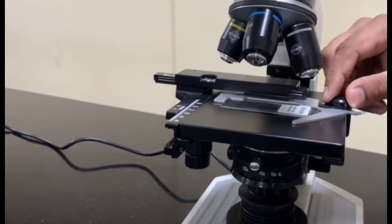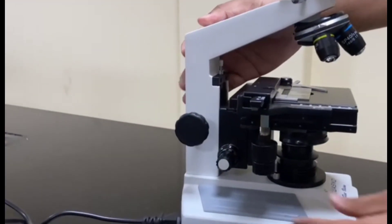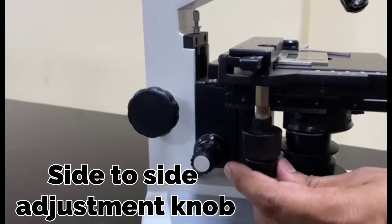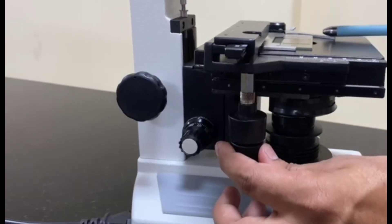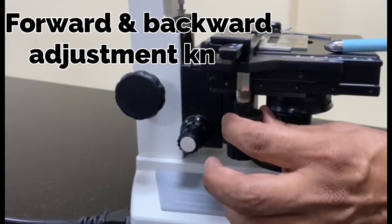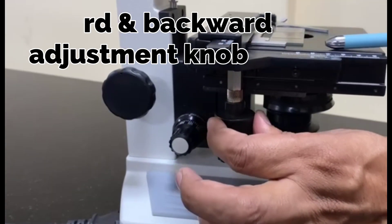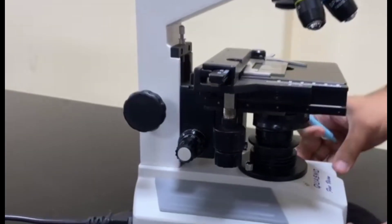Now come to these two knobs. The lower knob is used to move the slide laterally and medially, you can see that. And the upper knob is used to move the slide forward and backward so that you can adjust the slide just over the light.